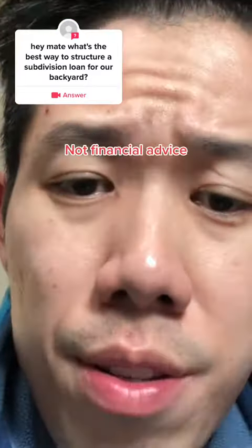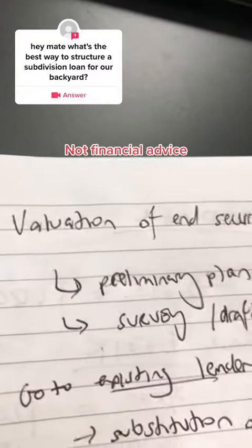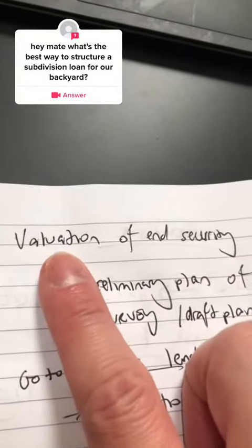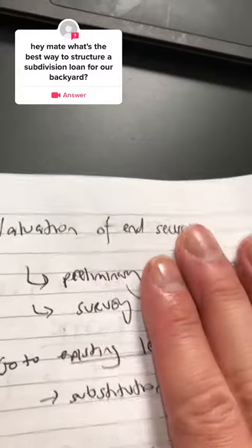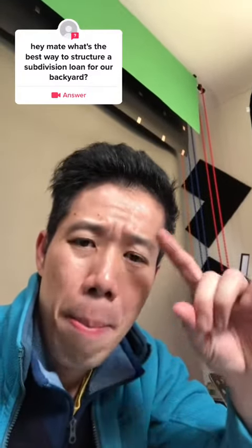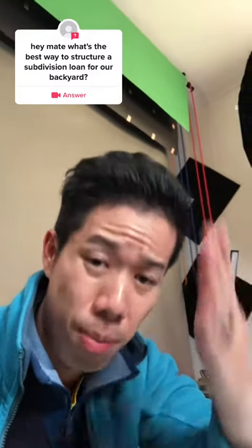Firstly, if I was to do it, not financial advice. Get your existing bank or the new bank you're going to do a valuation on the end security. So what end security means is what is the market value at the end of the subdivision?